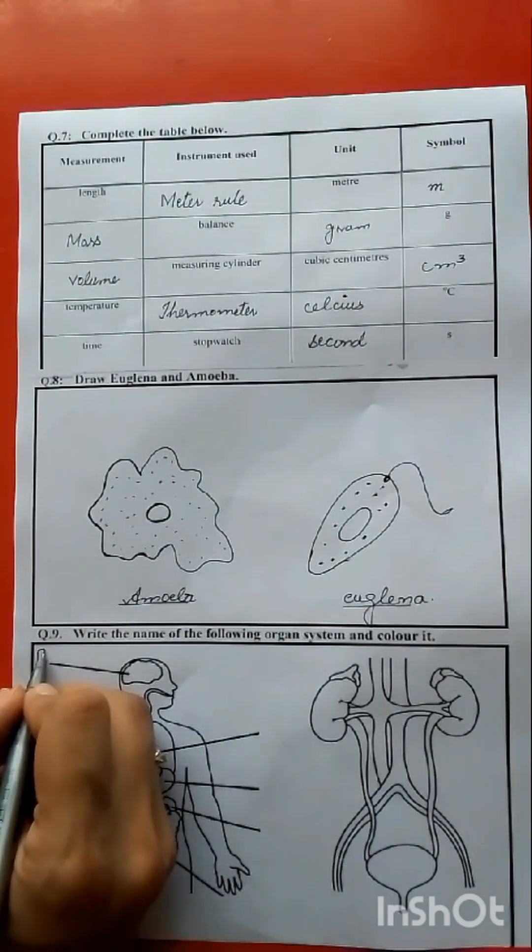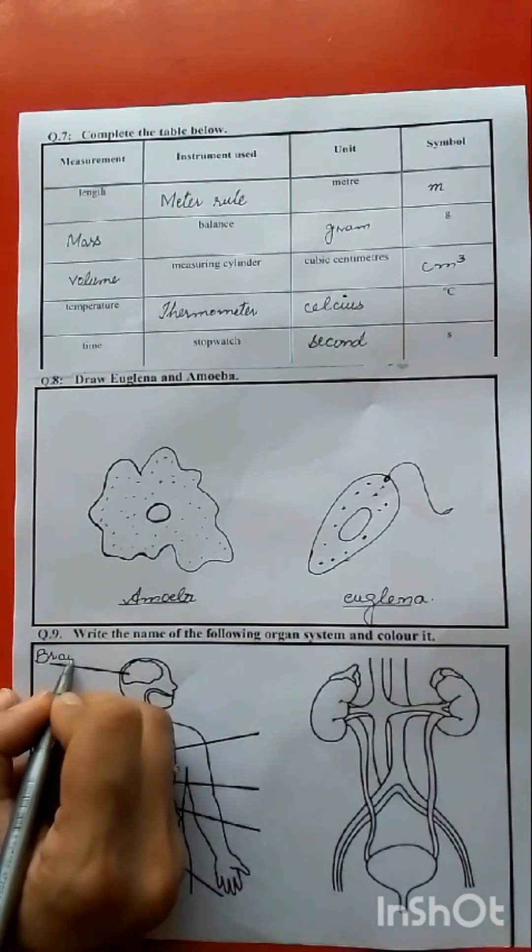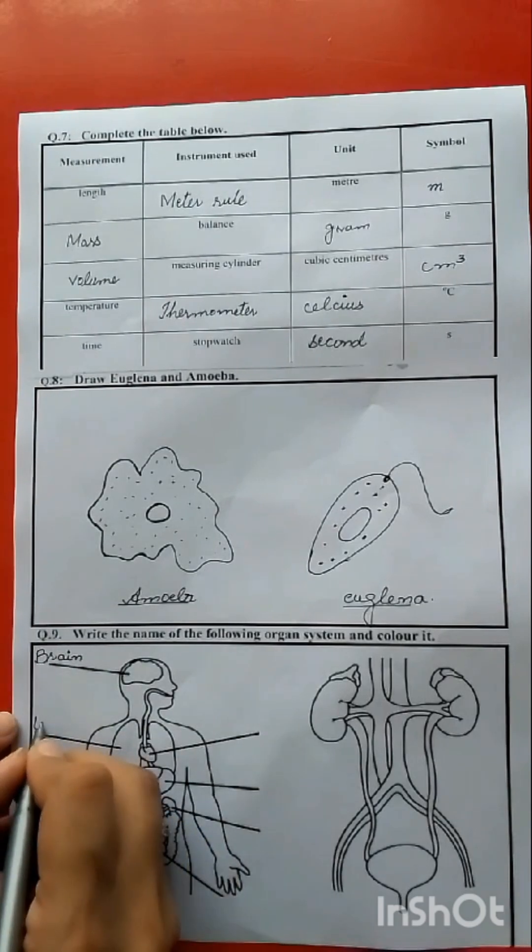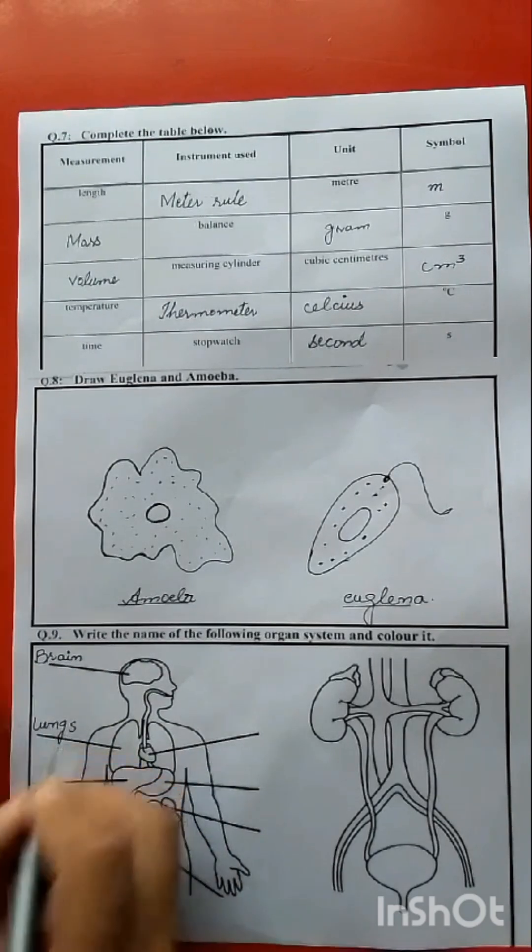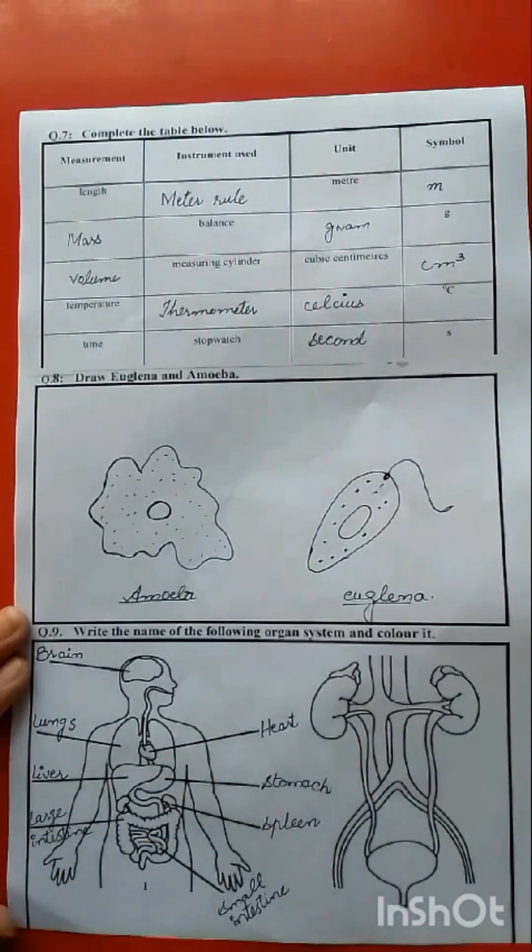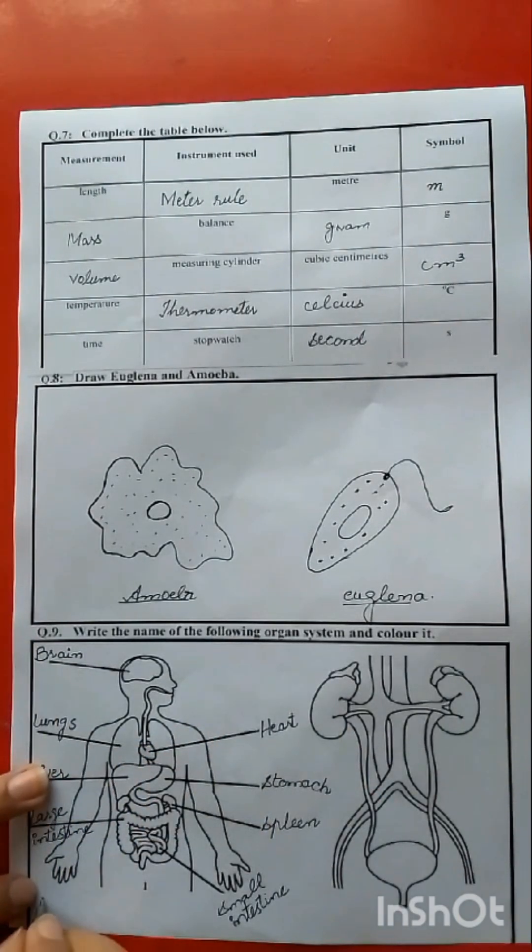What is this? The brain. Next, what is this? The lungs. You should mention organs, you should identify that it is the organ system. Look, this is the digestive system, digestive system.